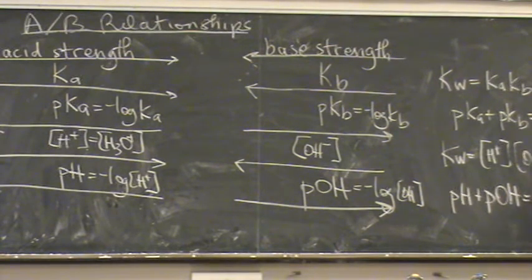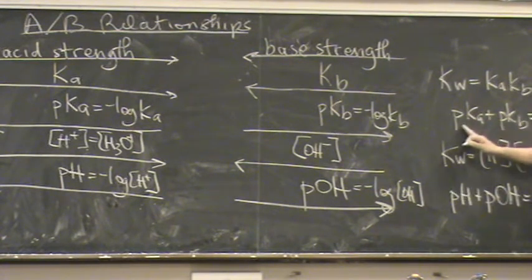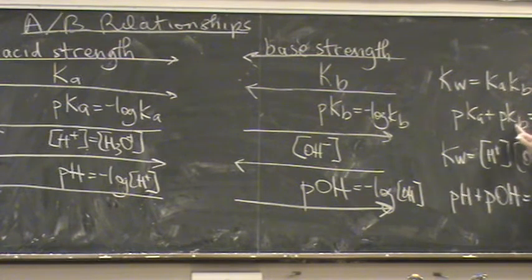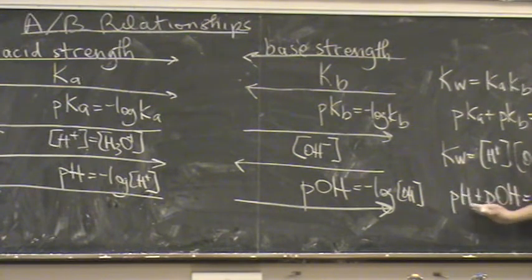And you have to think when you see, say the first formula, these are conjugates. So Ka is for the acid, Kb is for the conjugate base. Or you could say for the base and the conjugate acid. And then we've got acid and the base strength.